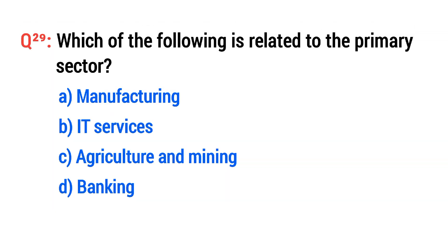Question twenty-nine: Which of the following is related to the primary sector? The right option is C: Agriculture and mining.